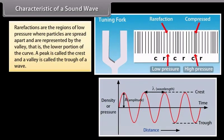Rarefactions are the regions of low pressure where particles are spread apart and are represented by the valley, that is, the lower portion of the curve. A peak is called the crest and a valley is called the trough of a wave.